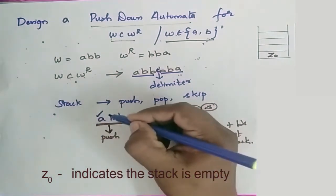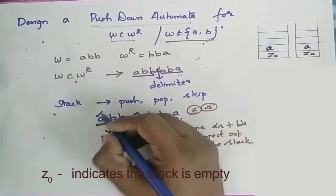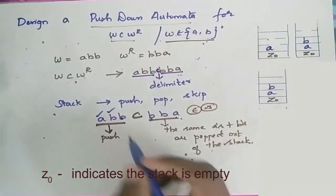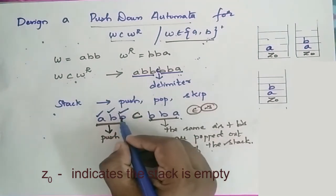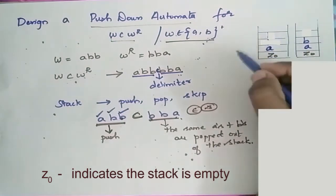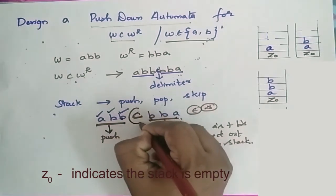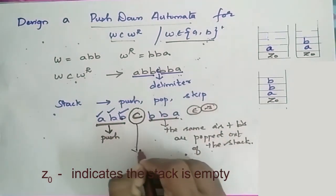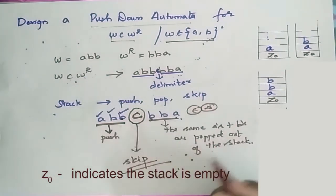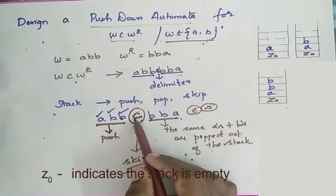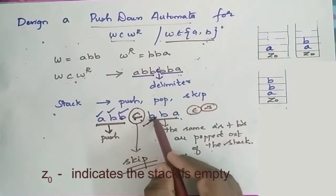When I encounter A, it is pushed inside the stack. When I encounter B, it is pushed inside the stack. When I encounter another B in the string, I push it inside the stack. When I encounter the delimiter C, I just skip to the next. After the delimiter, I encounter B — this B has to be popped out of the stack.